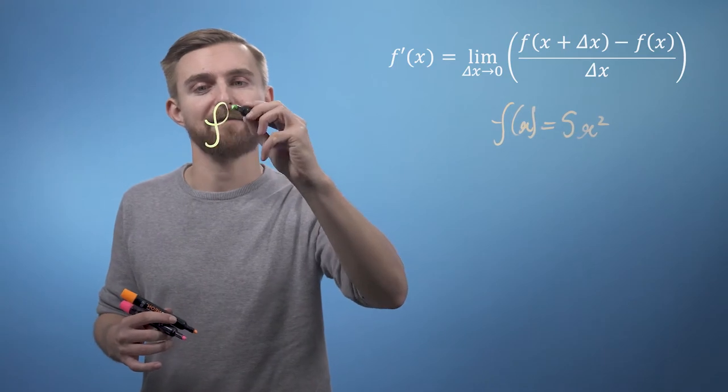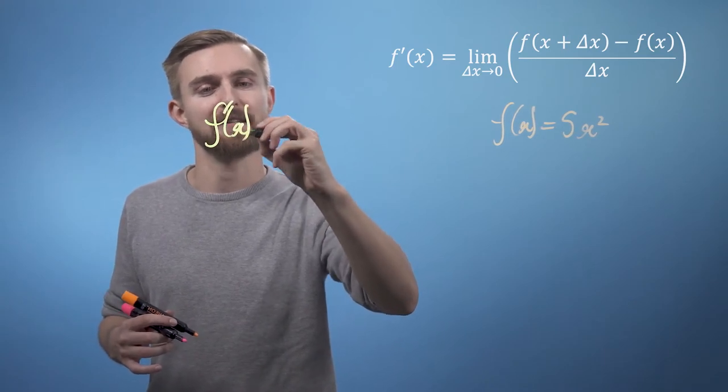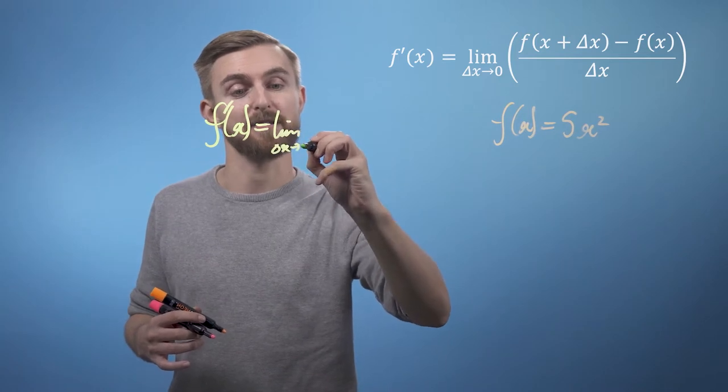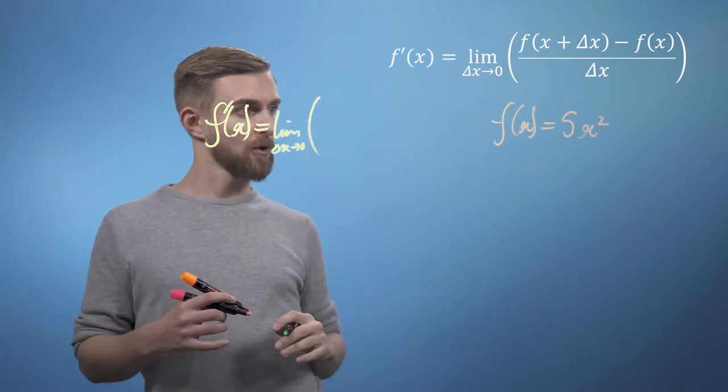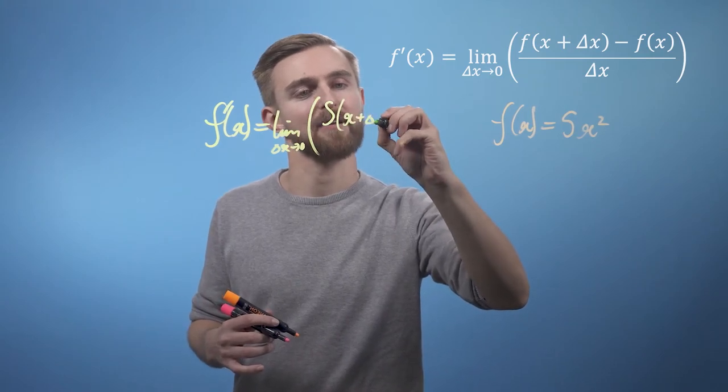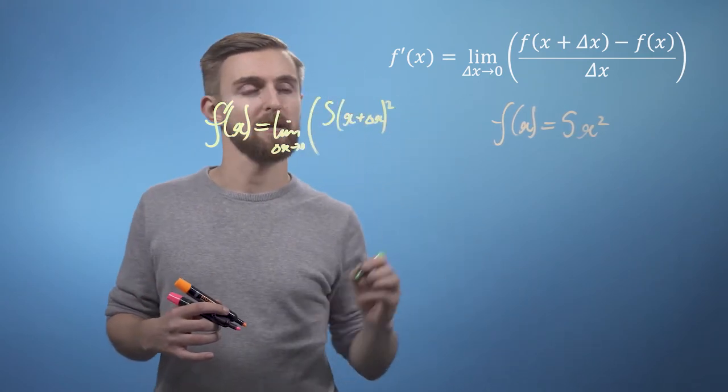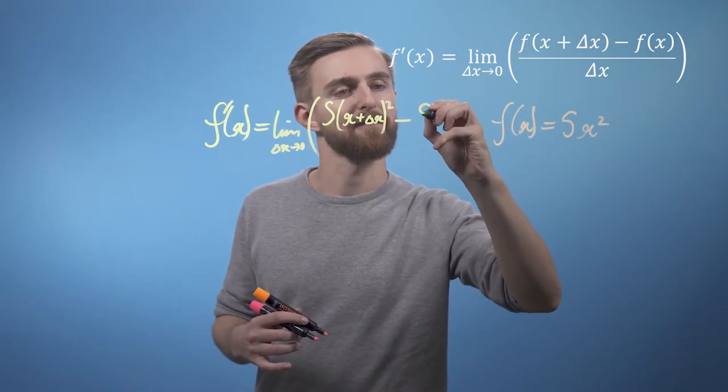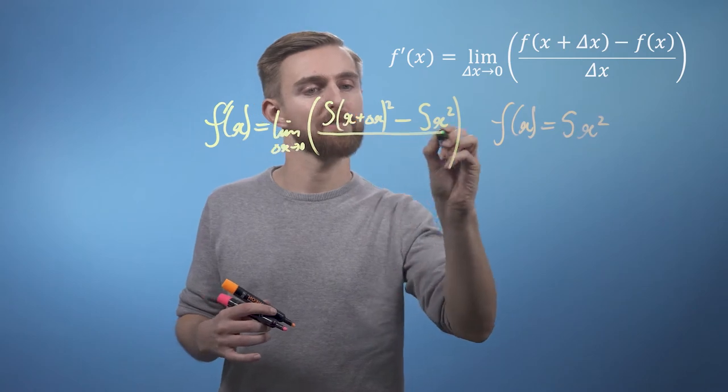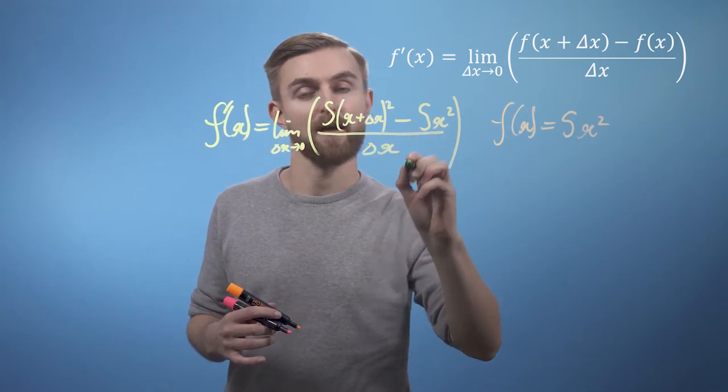All we're going to do is take this thing and put it into our differentiation expression at the top. So, f dash of x equals the limit as delta x goes to 0 of, well, we've got 5 times x plus delta x all squared minus 5x squared. All divided by delta x.